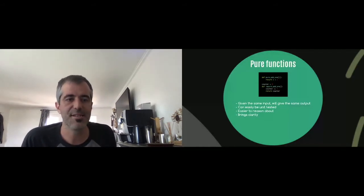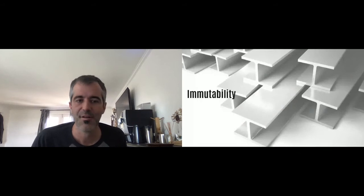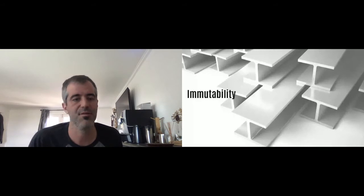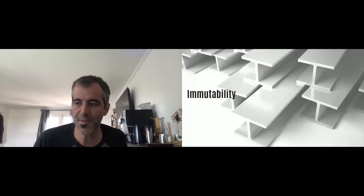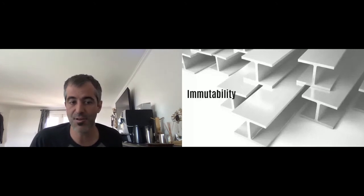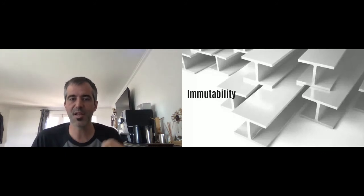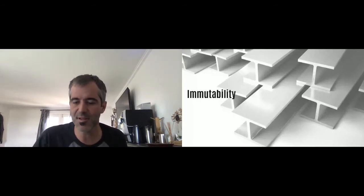Now, talking about immutability — another fundamental concept in functional programming is that your objects are thought of as immutable. Once you assign a variable to an object or piece of data, this piece of data won't change unless you assign it to another variable. It changes the paradigm in all sorts of ways, but it's a nice guarantee you have as a programmer — once something has been assigned in a certain scope, it won't change, providing a set of guarantees you can build upon.